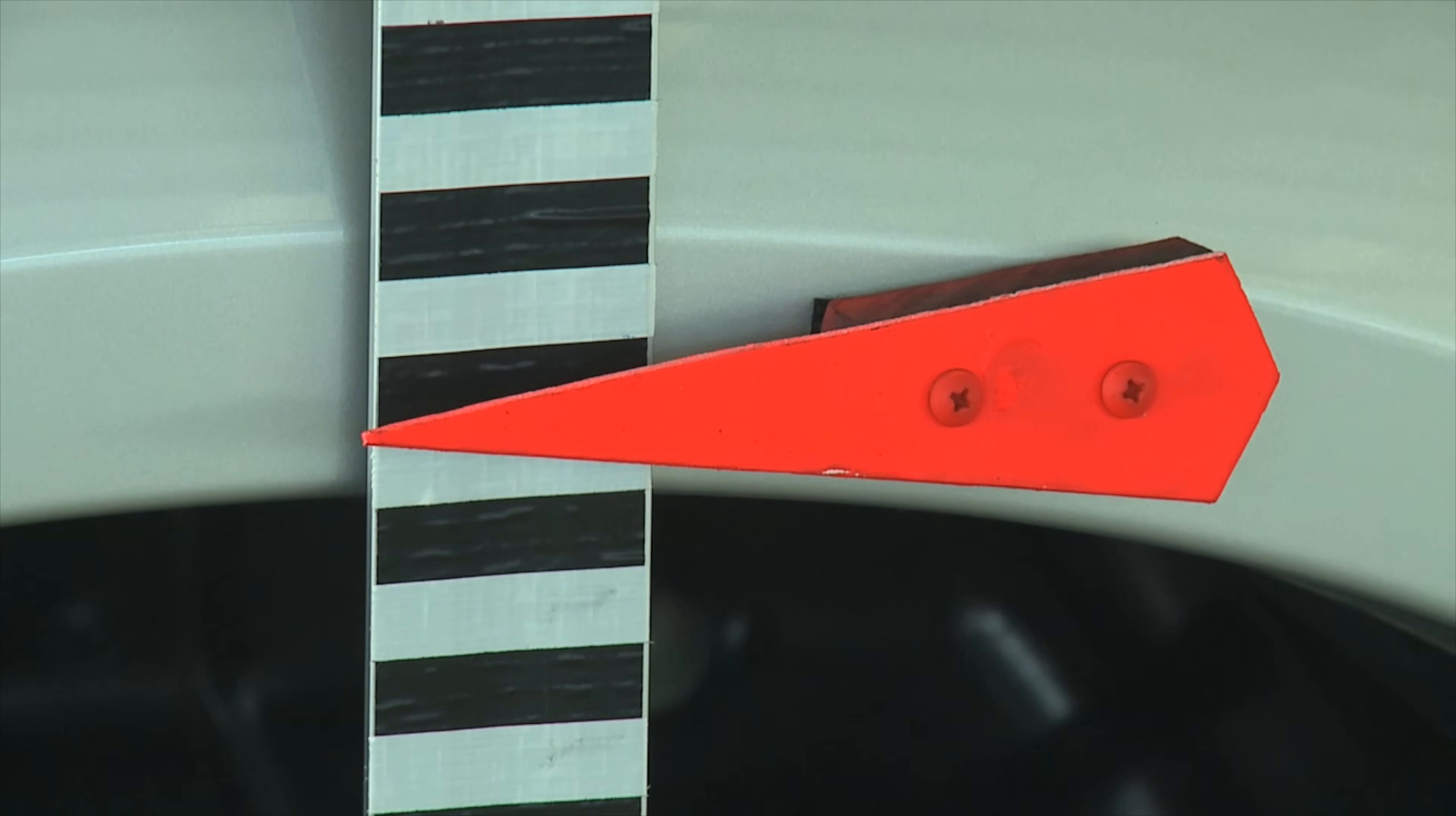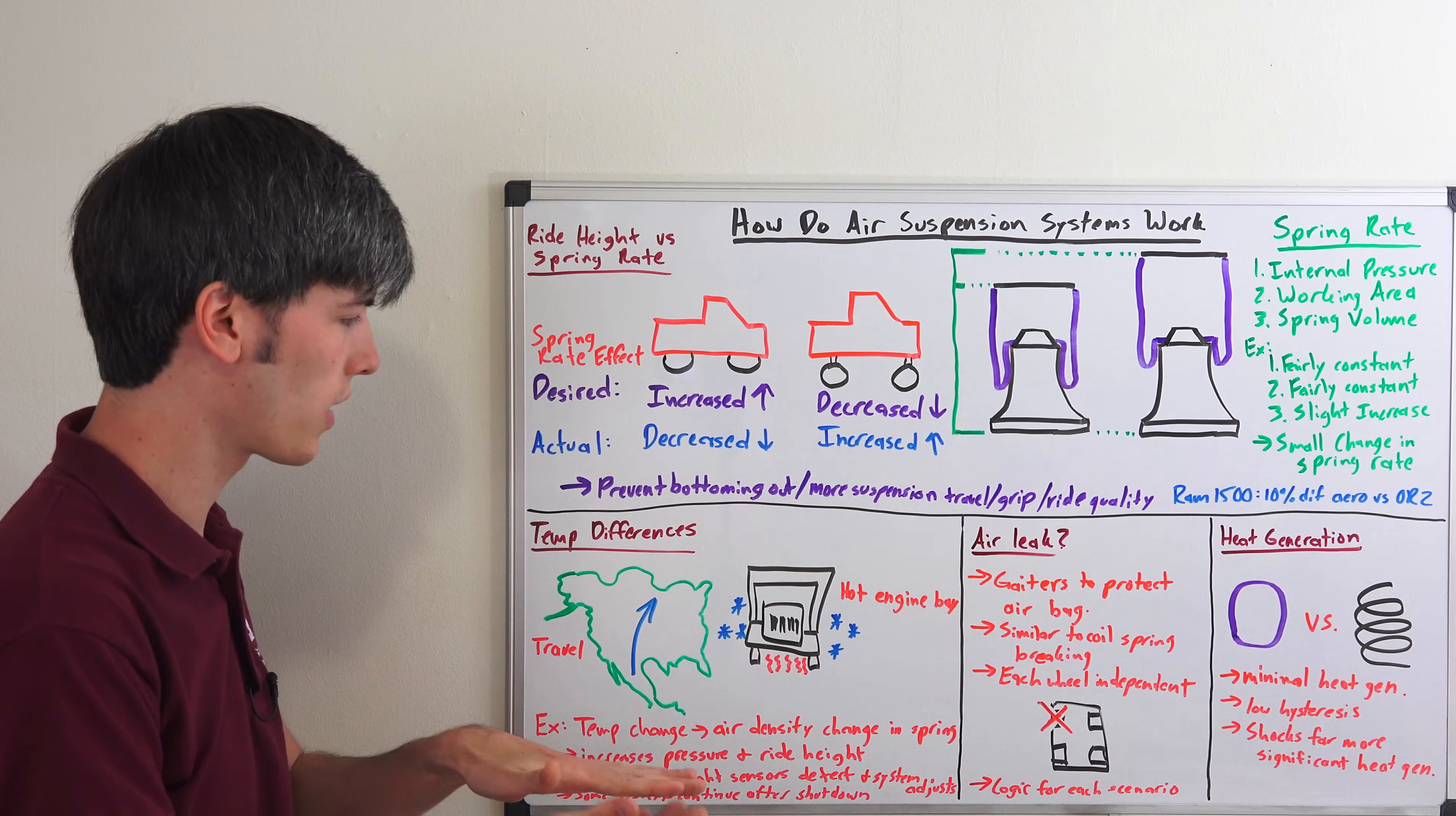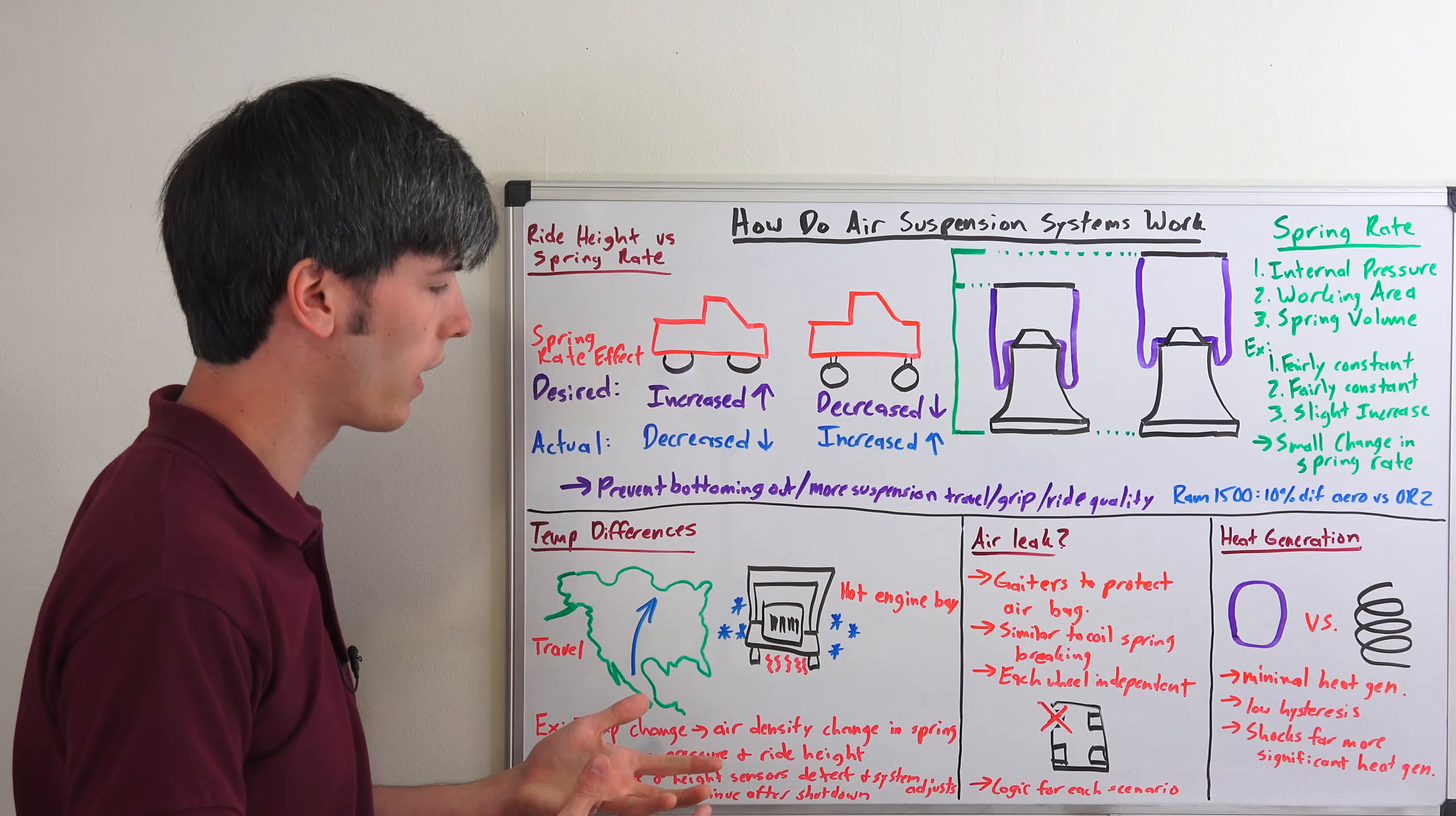As a result, there's pressure sensors and height sensors which are going to be able to detect these differences. So they're going to see that the height has changed and that will release air. And so then the system will maintain that targeted ride height. Some systems can even continue after the vehicle shuts down.